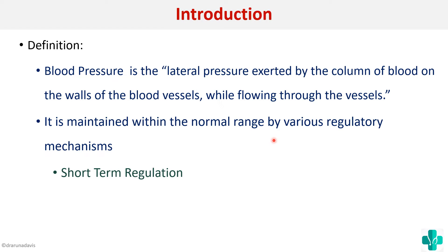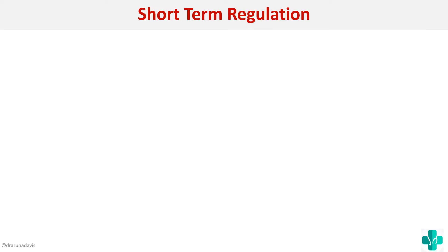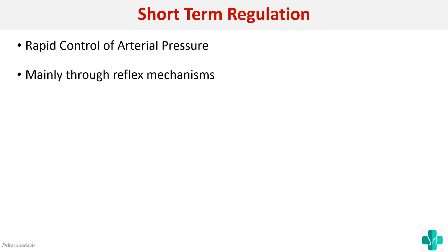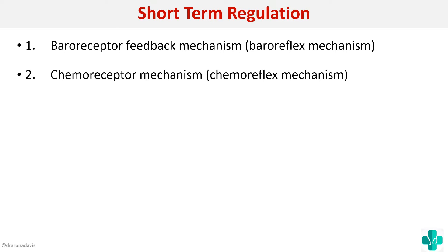The regulatory mechanisms are: short-term regulation, intermediate regulation, and long-term regulation — three levels at which BP is regulated. The first is short-term regulation. In short-term regulation, the most important feature is rapid control of arterial pressure, occurring within seconds to minutes, mainly through reflex mechanisms. The three reflex mechanisms are: baroreceptor reflex, chemoreceptor reflex, and CNS ischemic response.